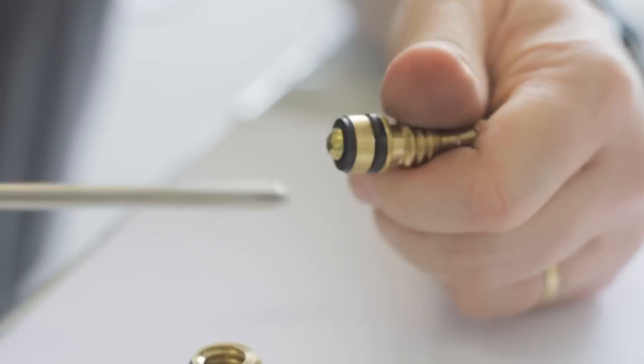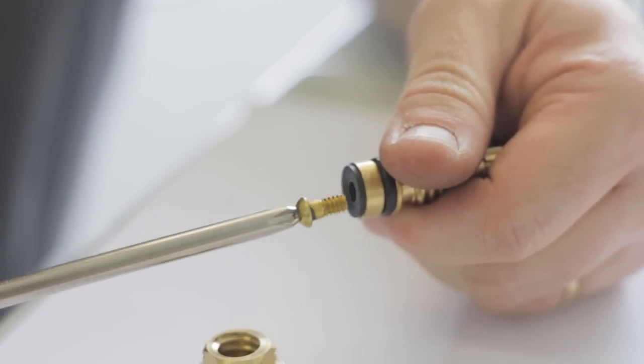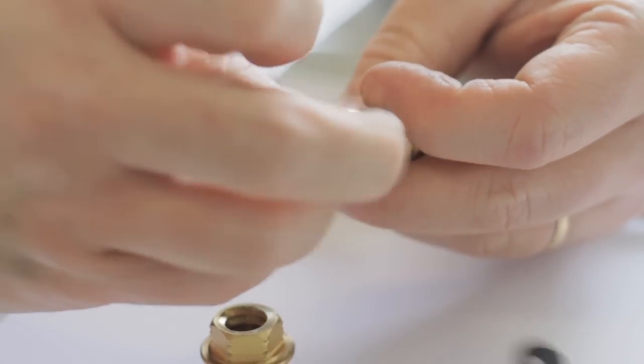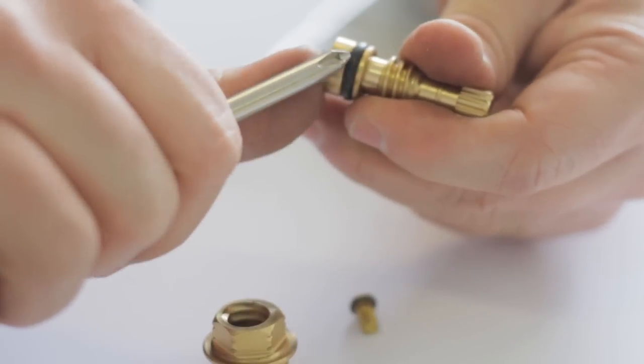Remove the screw from the end. Now some faucets have a little bit different kind of washer. And then remove your o-ring.